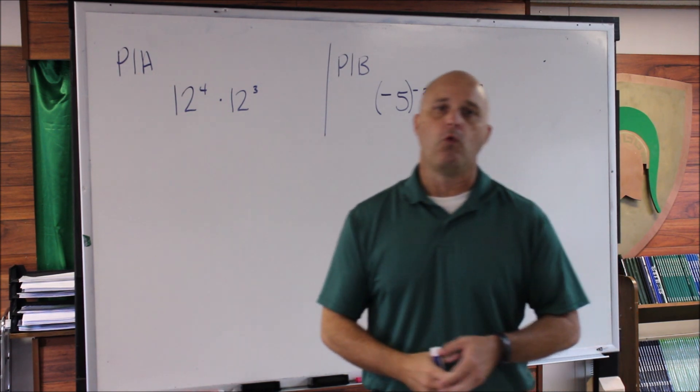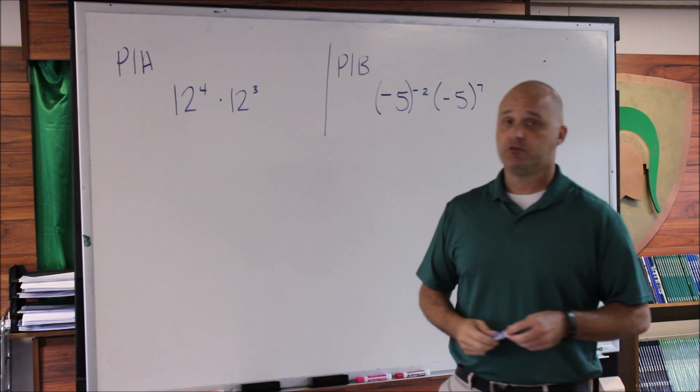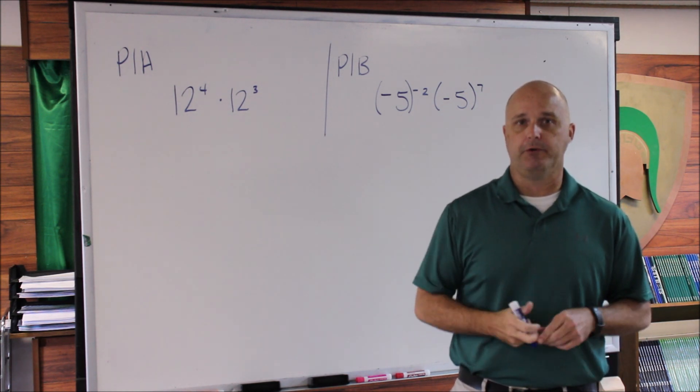Let's take a look at problems 1a and 1b. In 1a, you've got 12^4 × 12^3. We're being asked to write this as a single base with one exponent.